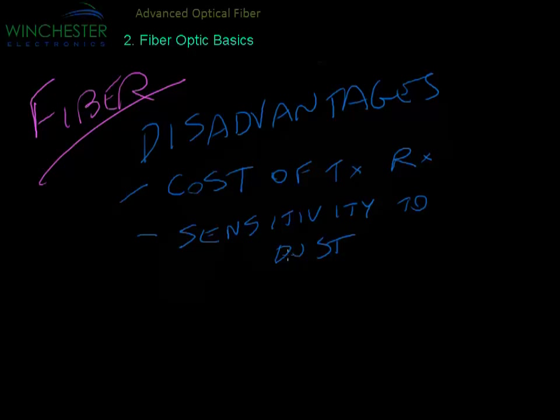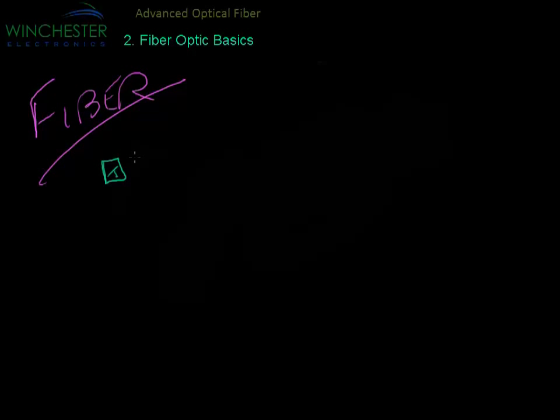Every fiber link works by having a transmitter at one end and a receiver at the other end with fiber in between. This fiber can be thought of as a kind of pipe where the light goes in one end and comes out the other end into the receiver.